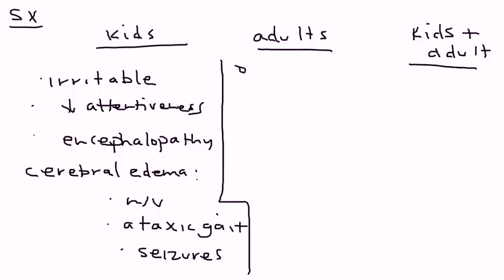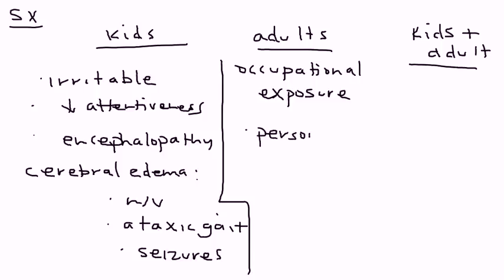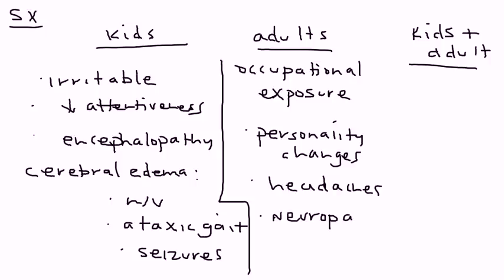In adults, it's more common that lead poisoning occurs because of some sort of occupational exposure — working in an environment where there's lead either in the air or some other source. One of the things they start to notice is their personality starts to change; the neurologic effect has a personality consequence. They also start complaining of headaches, and then eventually neuropathy sets in.